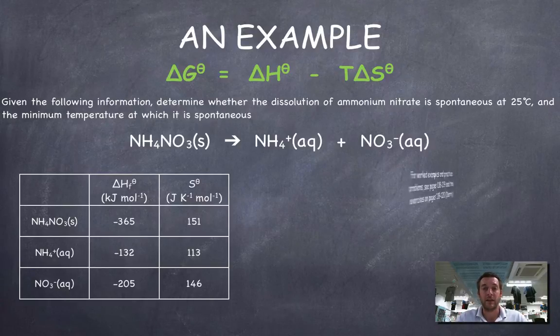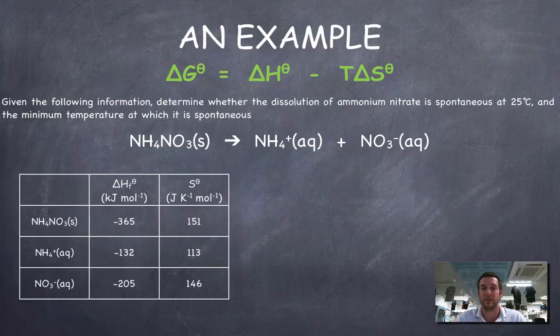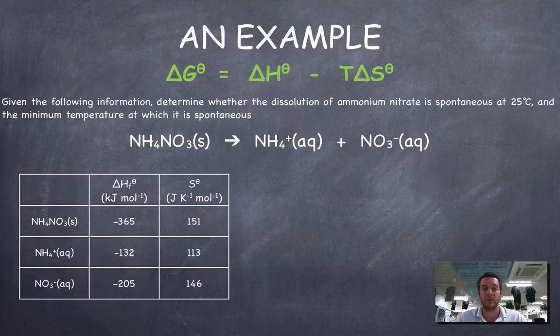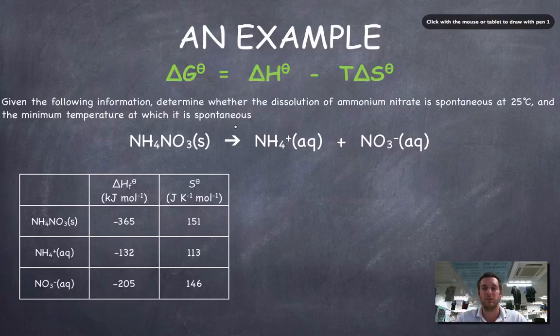Let's do a quick example. Given the following information, determine whether the dissolution of ammonium nitrate is spontaneous at 25 degrees Celsius and find the minimum temperature at which it's spontaneous.